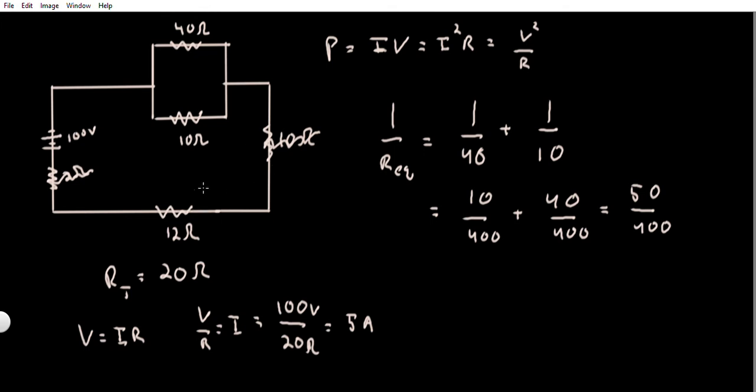So 5 amps throughout the entire circuit means that the voltage drop across this 12 ohm resistor must be, since V equals IR, I get 5 multiplied by 12, or 60 volts across this resistor over here.